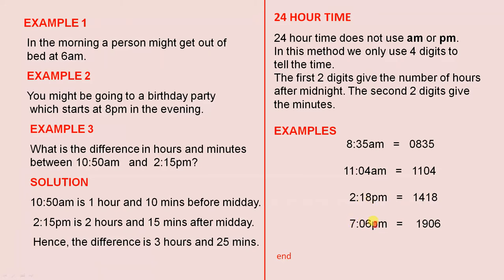7:06 PM is 1906, because from midnight to midday is 12 hours. Then we have another 7 hours. So 12 plus 7 is 19. And there are the minutes.